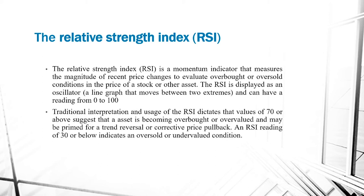Traditionally, interpretation and usage of the RSI indicates that values of 70 or above suggest that an asset is being overbought or overvalued and may be primed for a trend reversal or correction price pullback. An RSI reading of 30 or below indicates an oversold or undervalued condition.